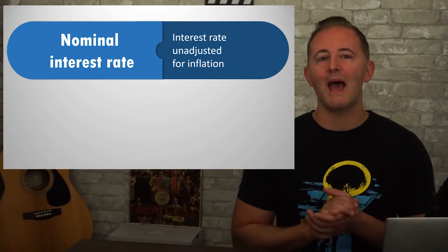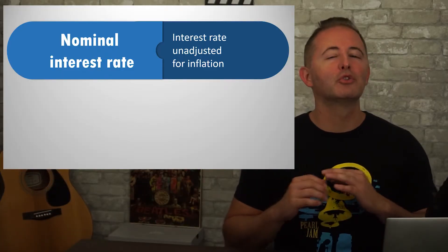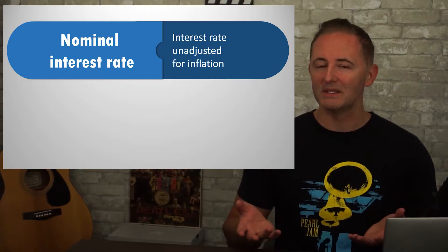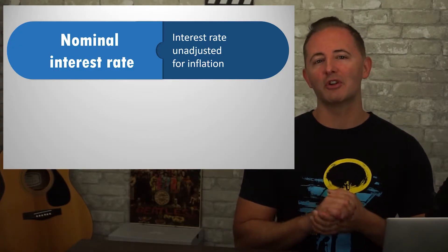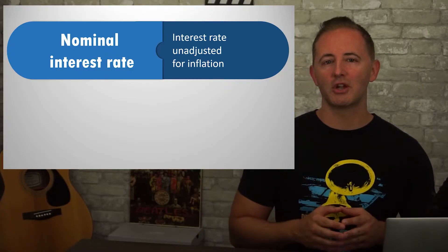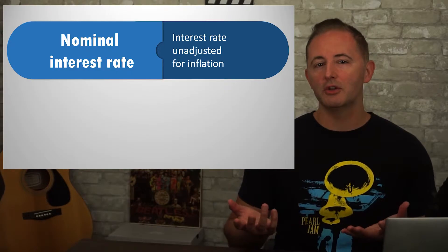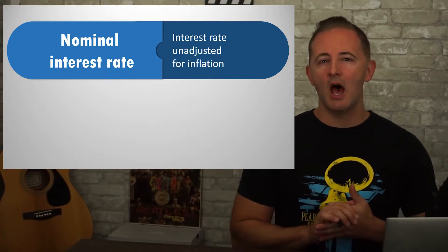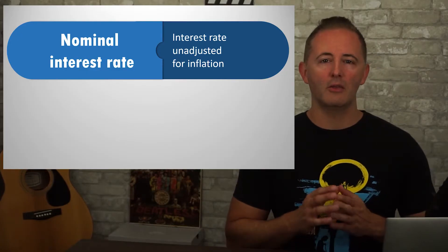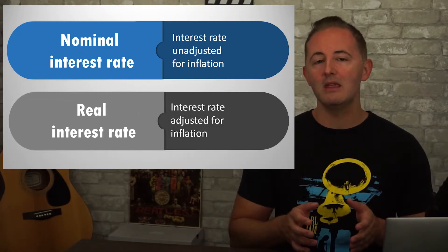A good question at this point would be to ask how nominal interest rates are established. We're going to go really deeply into that in a future video in this unit. But since we haven't learned about that model yet, all I can really say is that nominal interest rates are determined by supply and demand. Both borrowers and lenders have certain expectations about what they think inflation will be like over the life of the loan, and are therefore concerned about the real interest rate they'll be either paying or receiving.